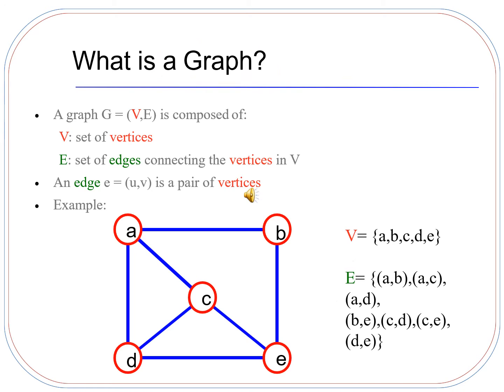What is a graph? A graph G is composed of V and E, where V is a set of vertices and E is a set of edges connecting the vertices in V. An edge E is equal to (U, V), which is a pair of vertices.